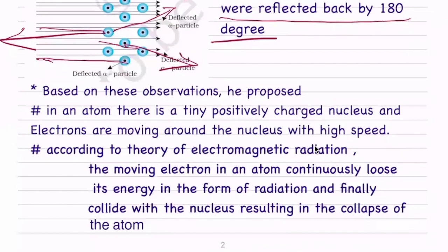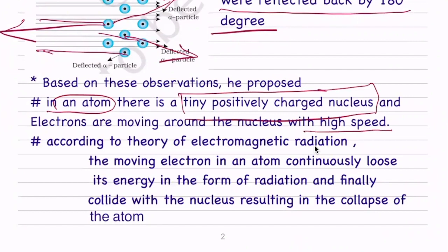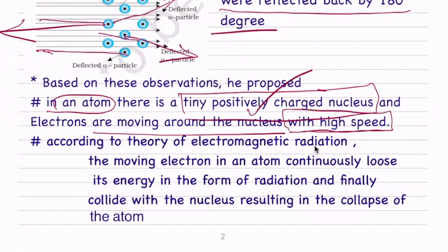Based on these observations, Rutherford proposed that in an atom, there is a tiny positively charged nucleus, and electrons are moving around the nucleus at high speed. The alpha particle is positive, and when it comes close to the positive nucleus in the gold foil, it is repelled. The atom has a tiny positively charged nucleus with electrons moving around it at high speed.